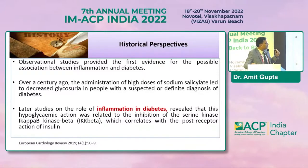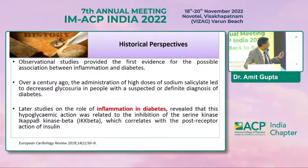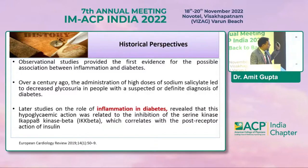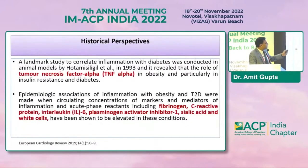Later studies on the role of inflammation in diabetes revealed that this hypoglycemic action was related to the inhibition of the serine kinase IKK-beta, which correlates with the post-receptor action of insulin — as long as 100 years ago. A landmark animal model study revealed the role of tumor necrosis factor alpha in obesity, and particularly in insulin resistance as well as diabetes.